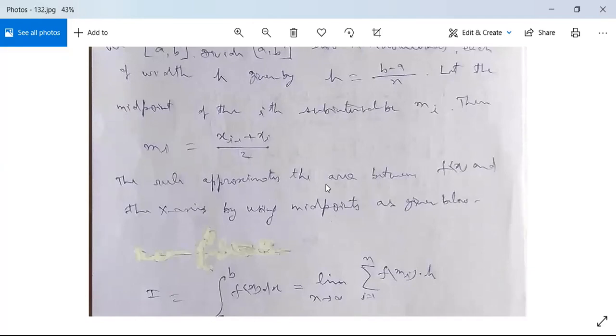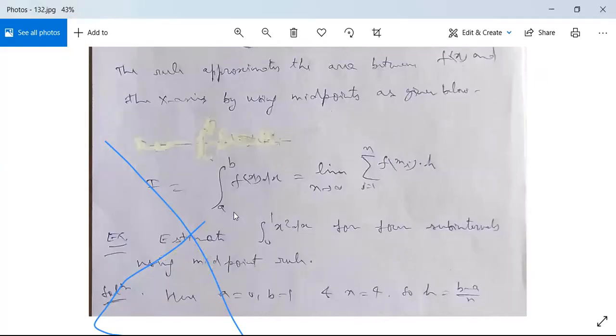The rule approximates the area between f(x) and the x-axis by using midpoints as given below. I is equal to integration from a to b f(x) dx. This is equal to limit n tends to infinity.